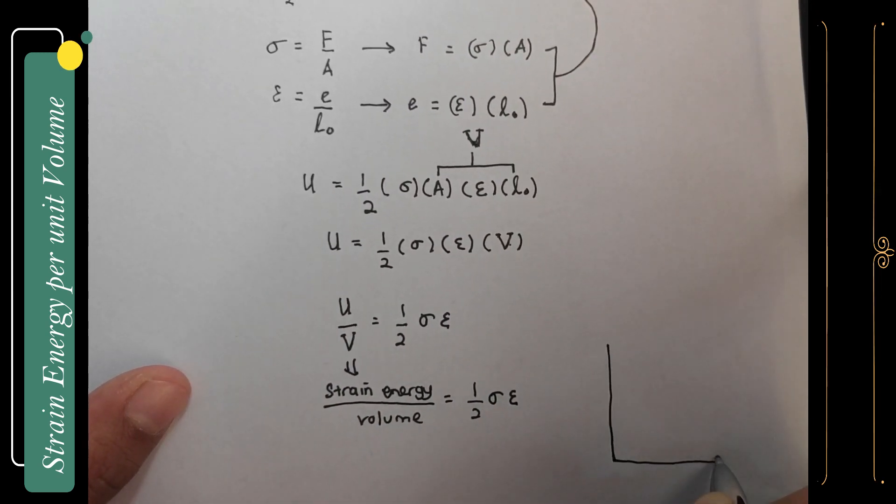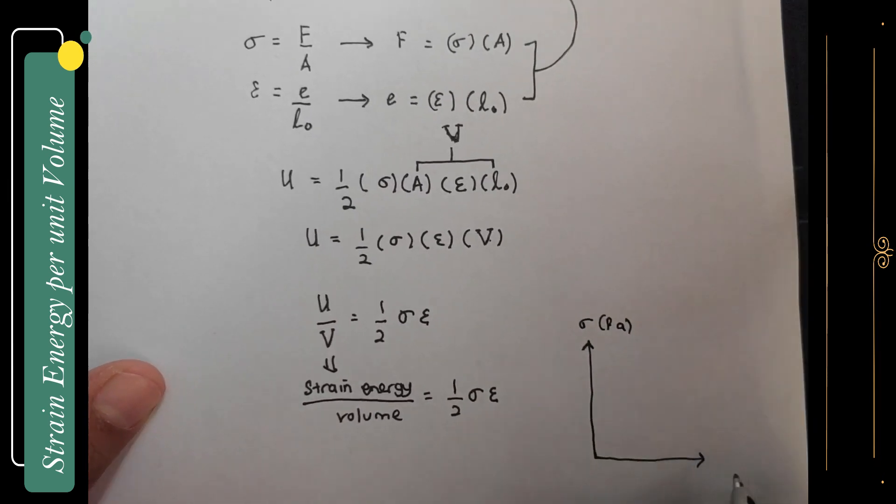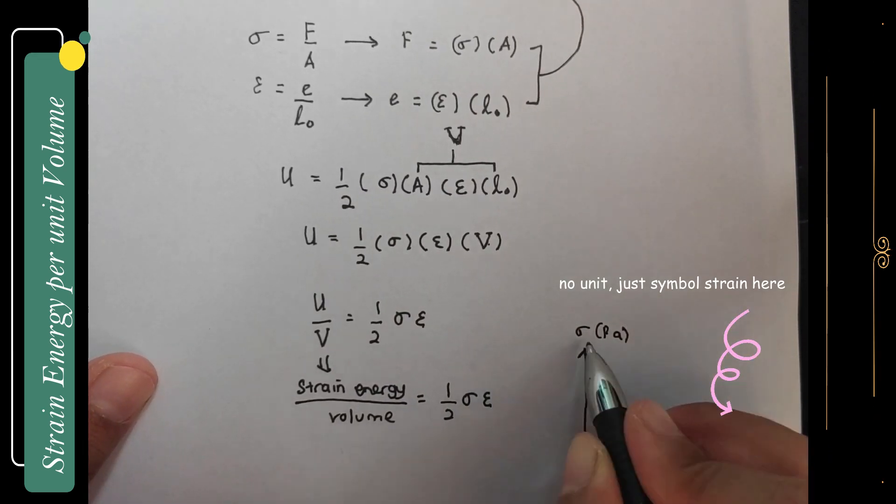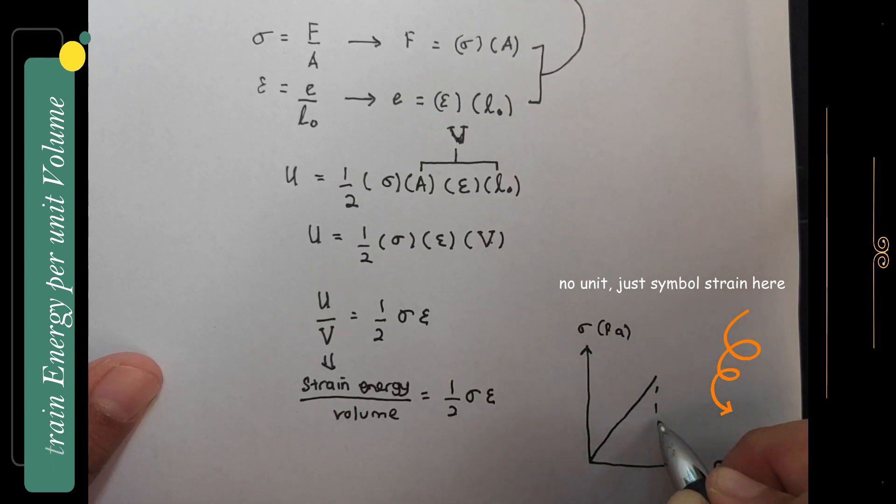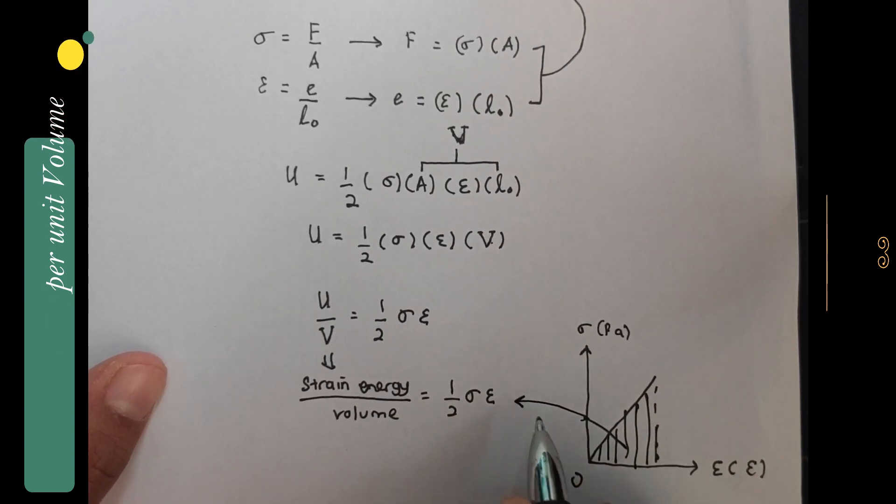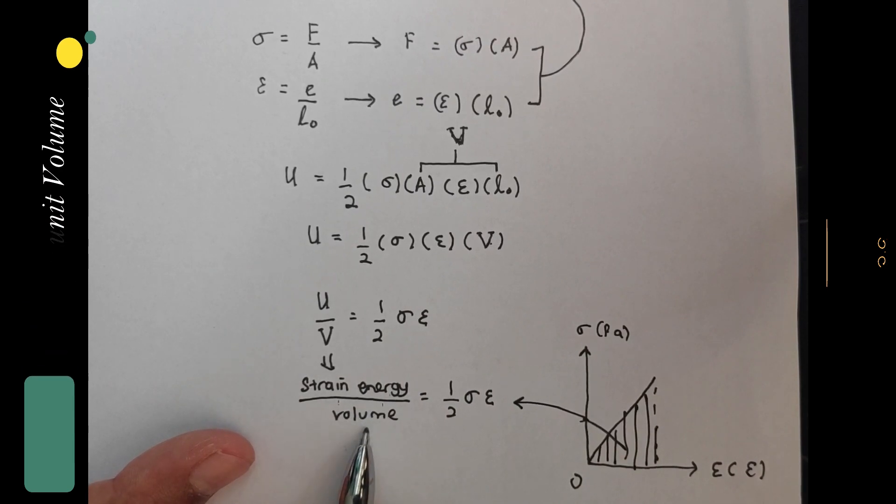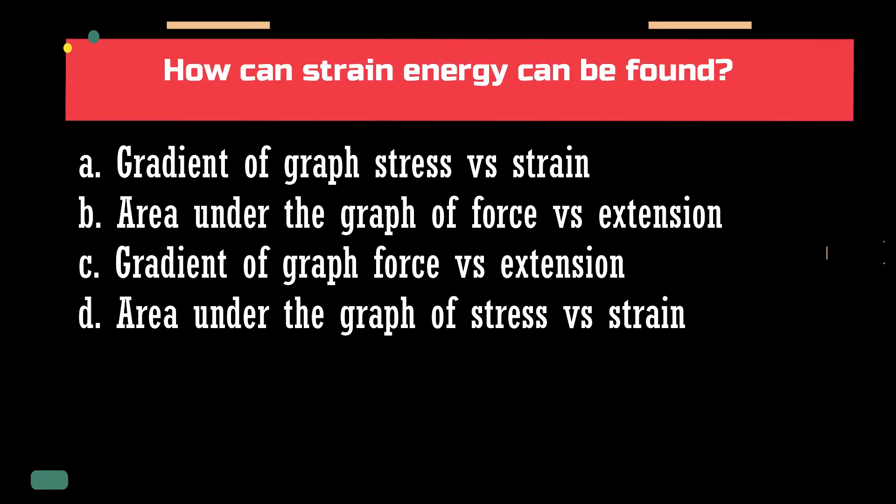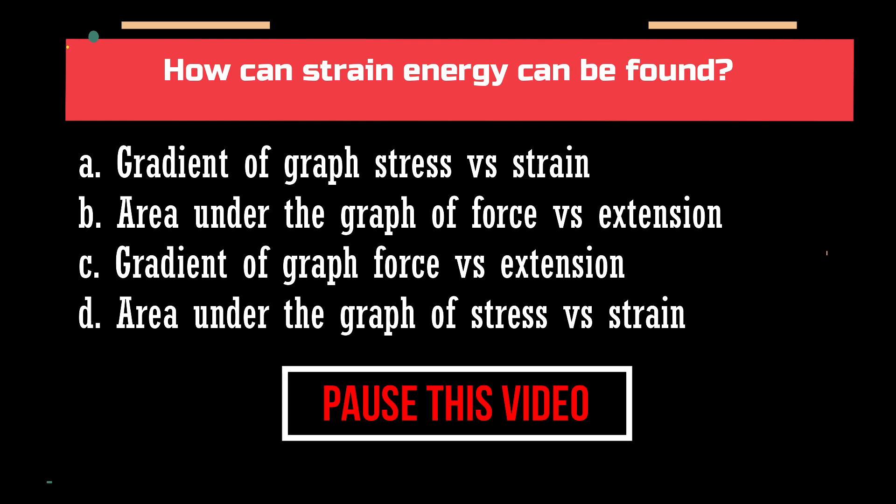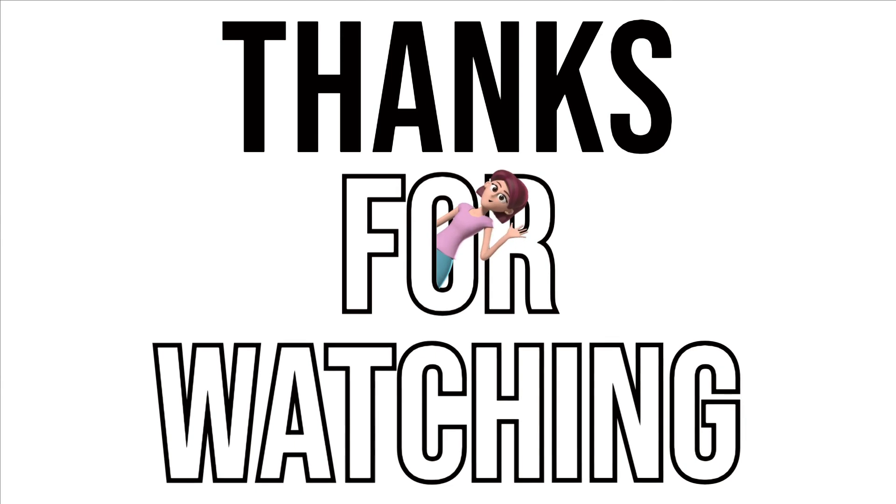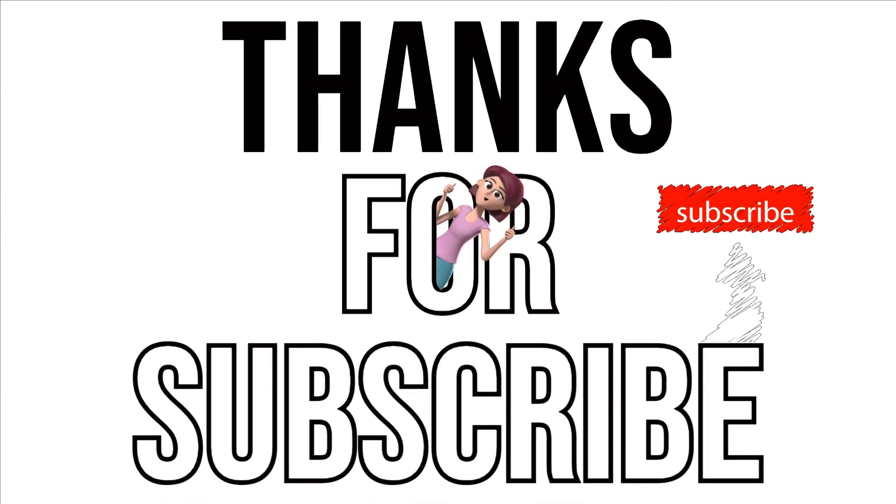If I have a graph of stress against strain, half stress strain is the area under the stress-strain graph. So if you want to find strain energy per unit volume, you have to find the area under the graph of stress against strain.